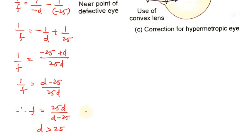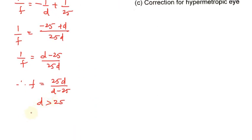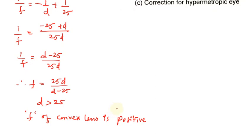Here D is the distance between the near point of the defective eye and the eye lens, and D is always greater than the least distance of distinct vision, that is 25 centimeters. Since D is always greater than 25, the focal length of this lens is positive — which confirms we are using a convex lens. That is why a convex lens is also called a positive lens. This is the focal length of the convex lens used to correct the defect of hypermetropia. Hope you have understood the explanation.